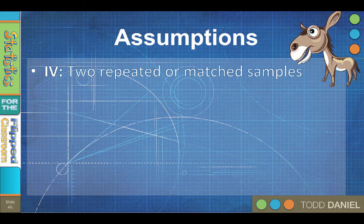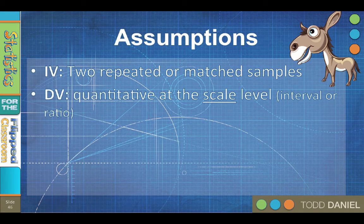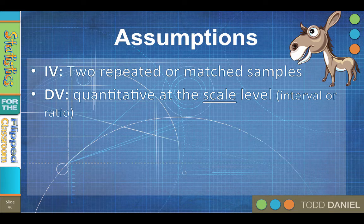The next non-negotiable assumption is that the dependent variable must be quantitative and at the scale level, meaning interval or ratio data, like Likert survey scale data with at least five answer options. You should choose a data collection instrument or survey that will give you scale level data. You should also check your dependent variable for errors and outliers during data cleaning, and make absolutely certain that your variables are scored correctly. For instance, if you are using a survey with items that are reverse scored, you need to change high values to low values and ensure that items in your scale have been coded in the same direction.